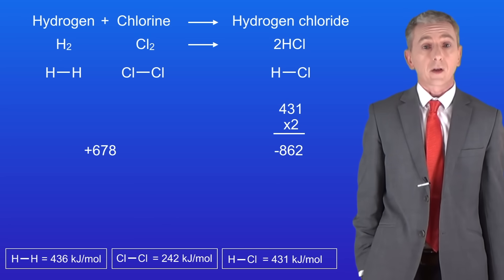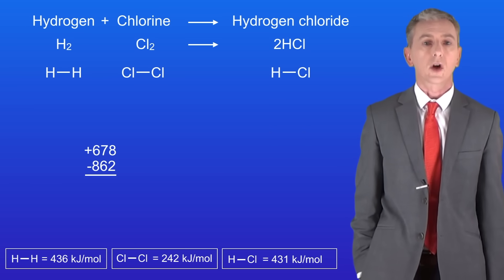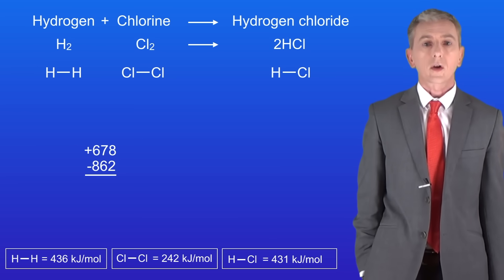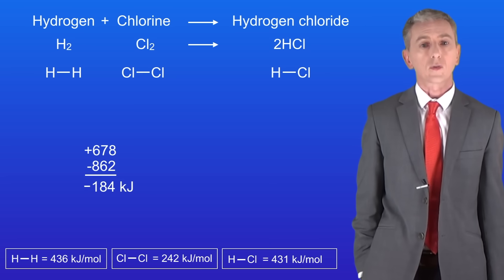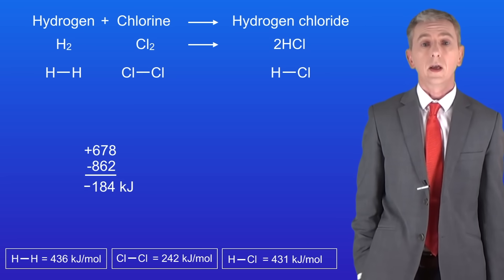Now we're ready to calculate the final energy change for the reaction. It's very straightforward. Simply move the right-hand value beneath the left-hand value like this, and then carry out the sum. So we've got 678 minus 862, which gives us a final energy change of minus 184 kilojoules. This shows us that this reaction is exothermic.